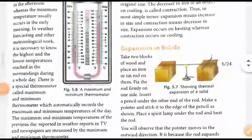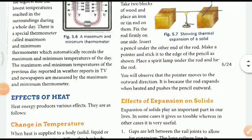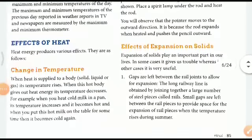Expansion in solids: Take two blocks of wood and place an iron or a tin rod in them. Fix the rod firmly on one side. Insert a pencil under the other end of the rod and make it a pointer. Stick it to the edge of the pencil. Place a spirit lamp under the rod and heat the rod. You will observe that the pointer moves to the outward direction. It is because the rod has expanded when heated and pushes the pencil outward.